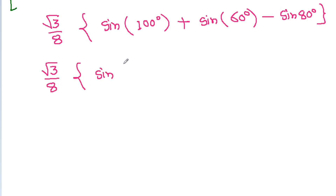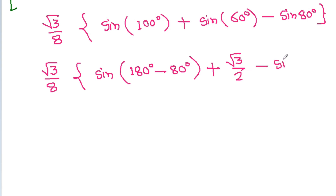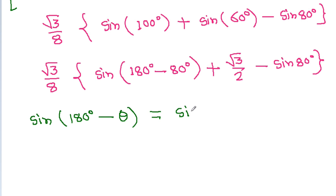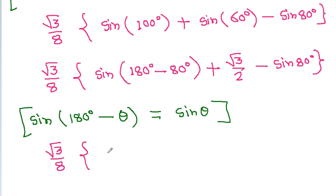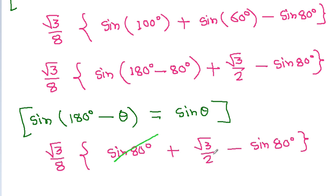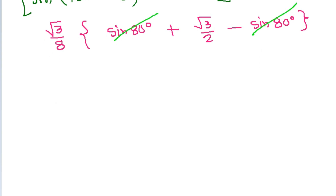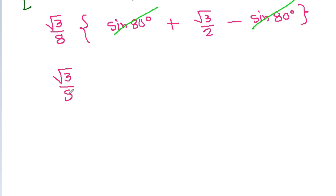Now sin 100° = sin(180° − 80°) = sin 80°, so sin 100° and − sin 80° cancel each other. We are left with √3/8 times sin 60°, and sin 60° = √3/2.